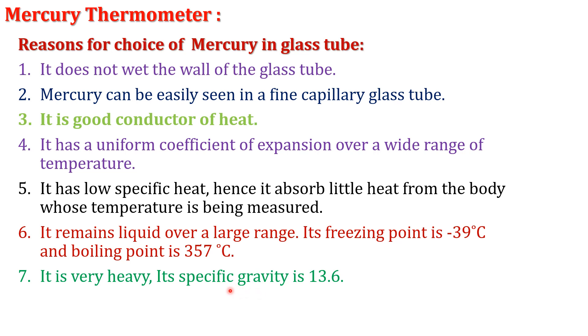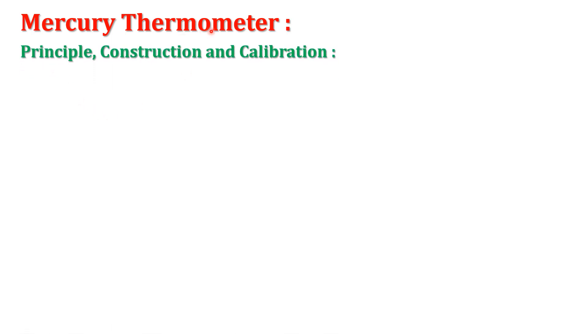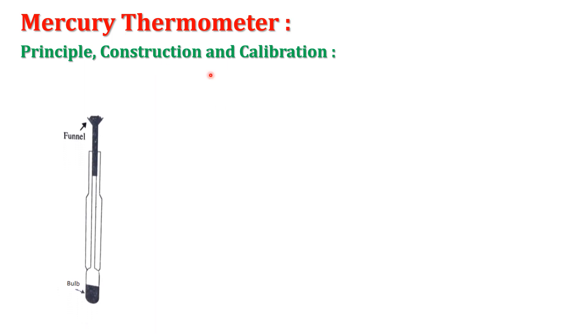Mercury is very heavy since its specific gravity is 13.6. Specific gravity is the ratio of the density of a substance to the density of a reference material, and therefore it is a dimensionless term. The principle of the mercury thermometer is based on the change in volume with change in temperature, since it is a type of liquid thermometer.